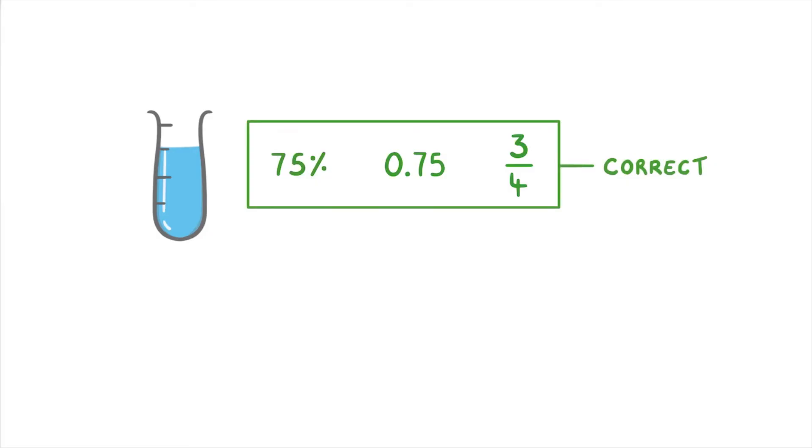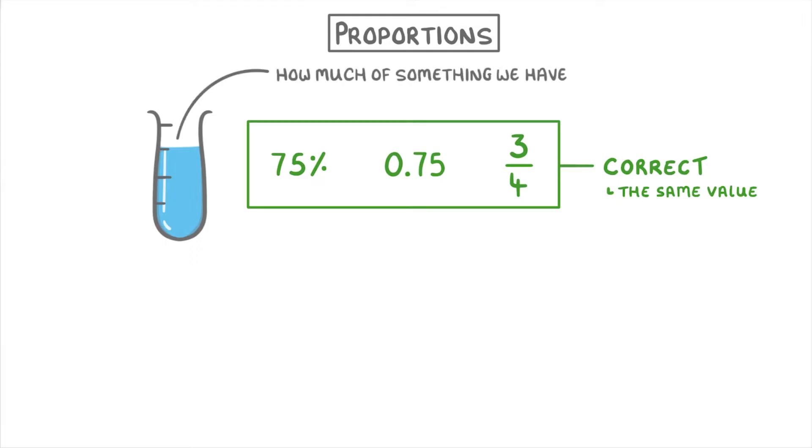All of these answers would be correct, because even though they all look different, they all have exactly the same value. This is because percentages, decimals, and fractions are just different ways that we can use to describe proportions, which just means how much of something we have.